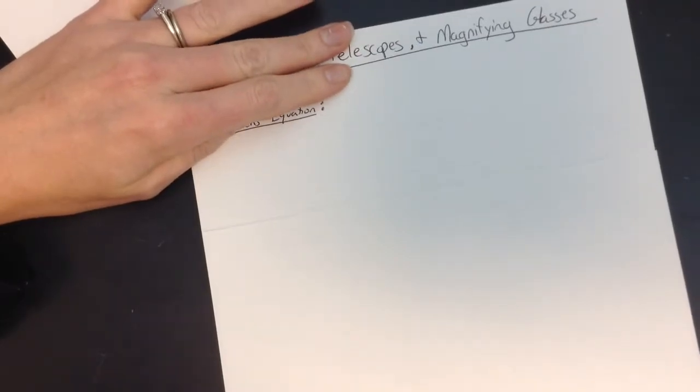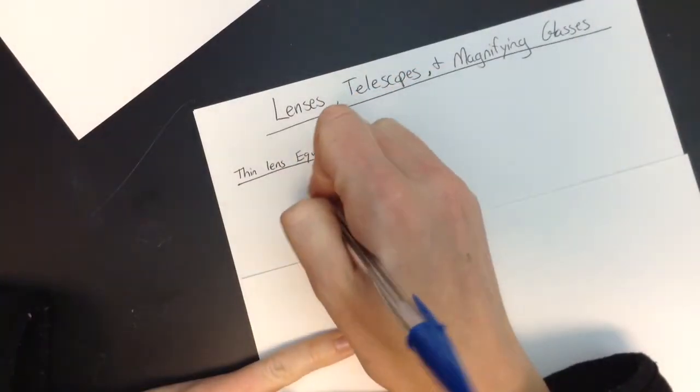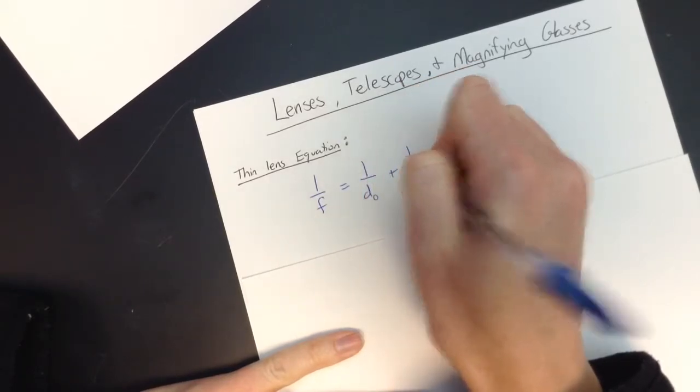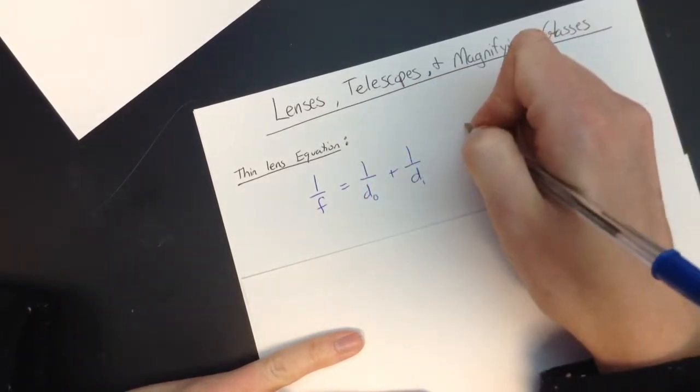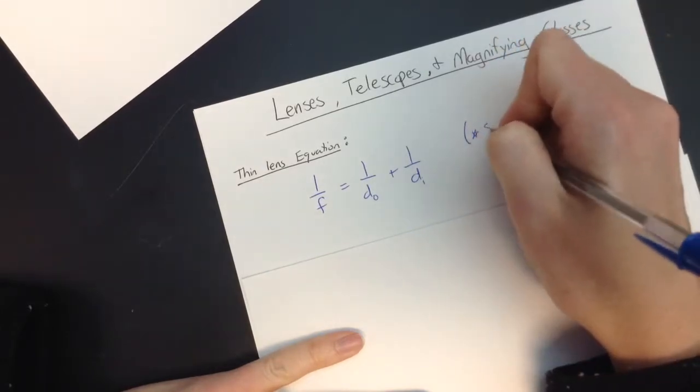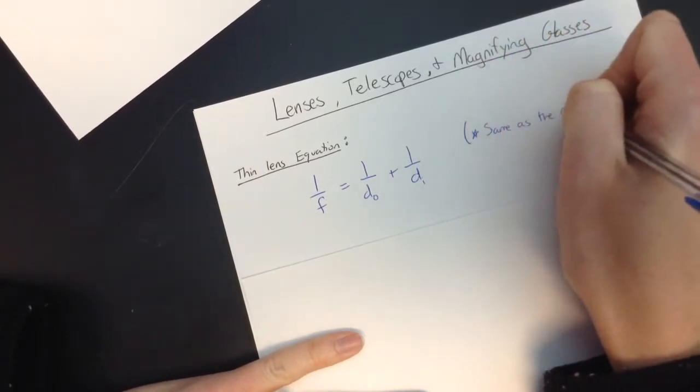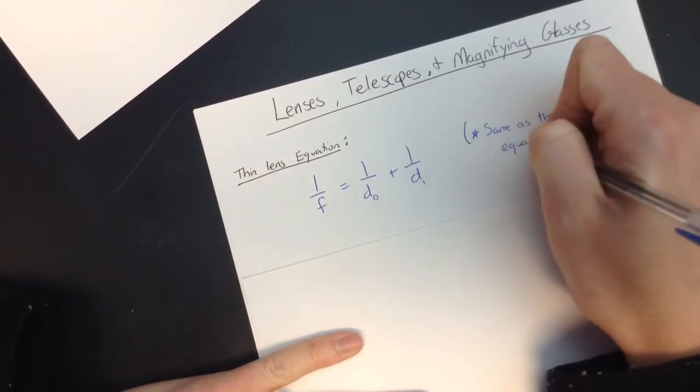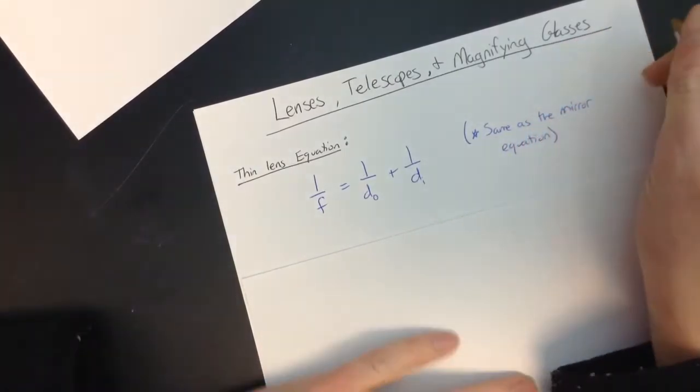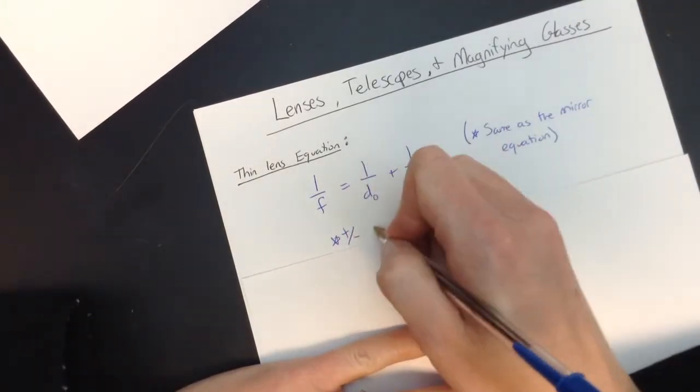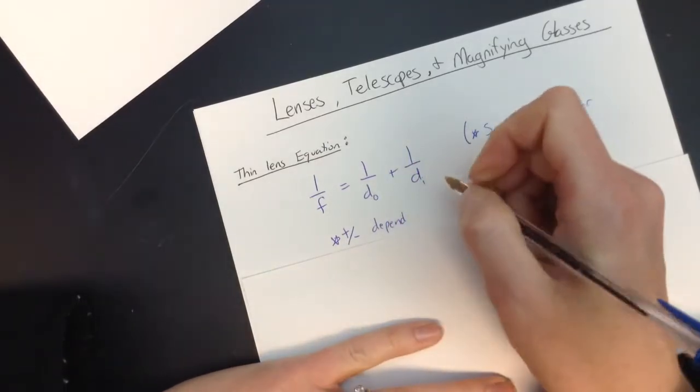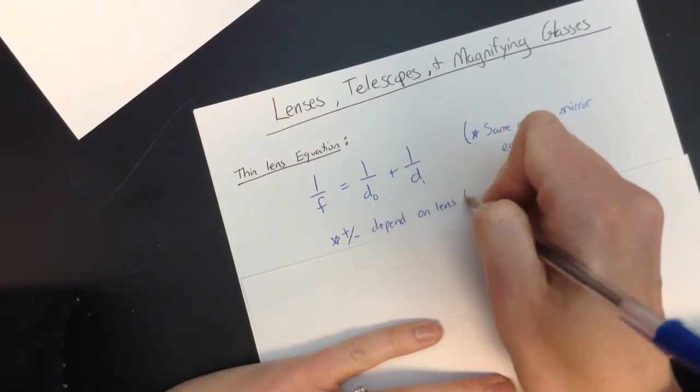Alright, so for starters, this is going to seem a little bit familiar here and there. We're going to talk about the thin lens equation first, and it looks like this: 1 over F equals 1 over DO plus 1 over DI. If you're thinking, hey, I've seen that before, you are right. This is the same as the mirror equation. The difference is the positives and negatives. They depend on the type of lens that you're using, and it's not quite as easy as the mirror.